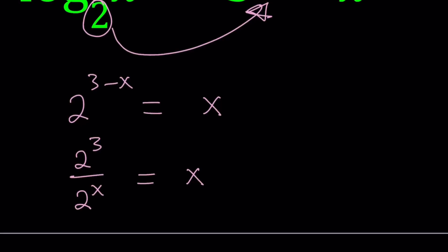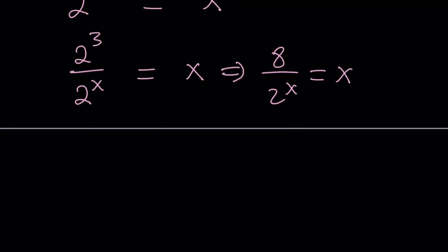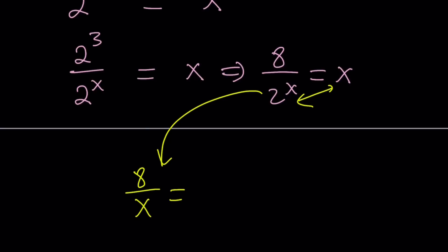So from here, let's write 2 to the third as 8, and then multiply both sides by 2 to the x — let's cross-multiply first. That's going to give me x times 2 to the x equals 8. Instead of leaving it that way, since the product of these two things equals 8, I can switch them. So this can be written as 8 over x equals 2 to the power of x.